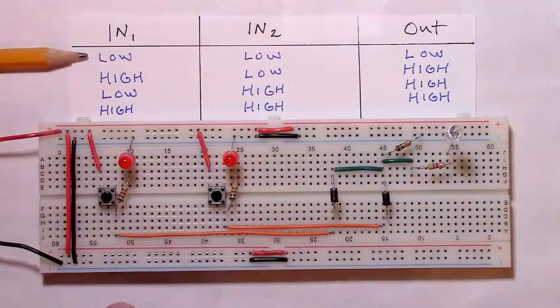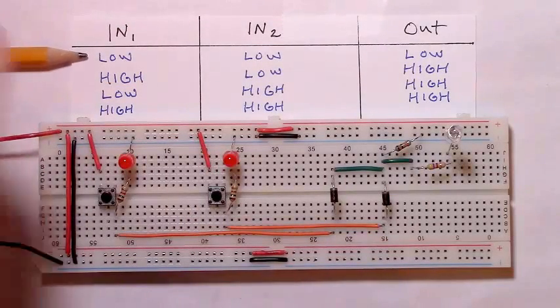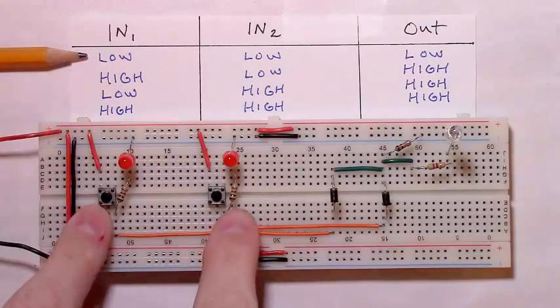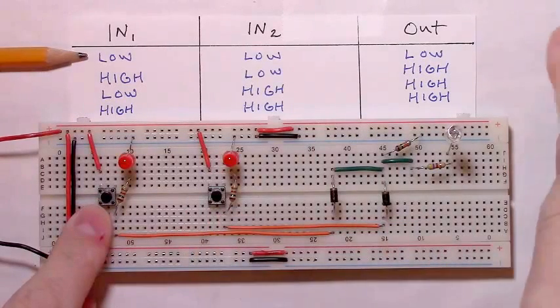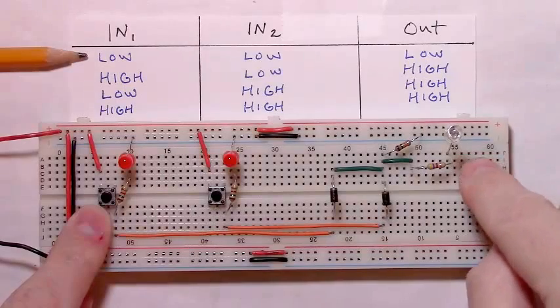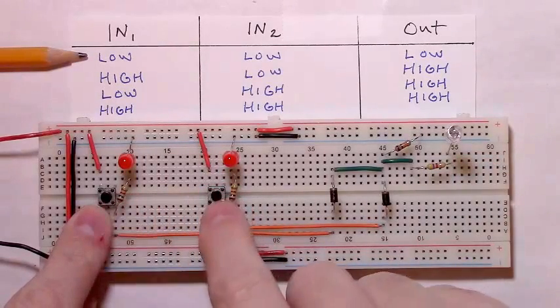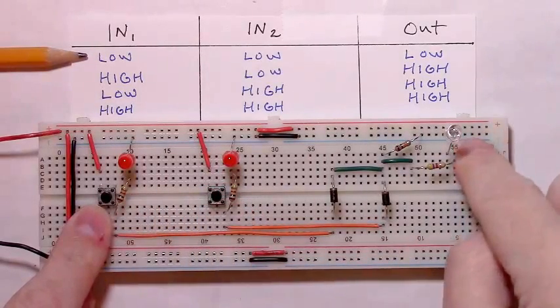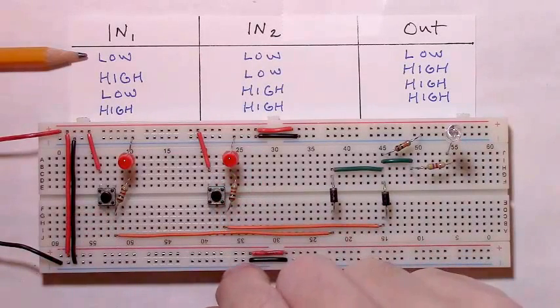Starting with the first line reading from left to right, whenever both inputs are low, input 1 and input 2 is low, we should expect the output to be low, which it is. Our output LED is off, our two input LEDs are off, so that matches the first row in the truth table.